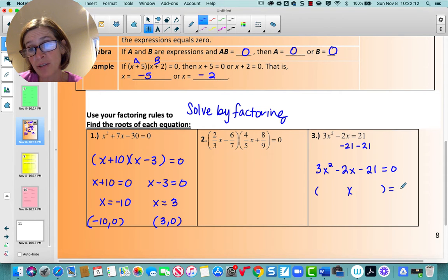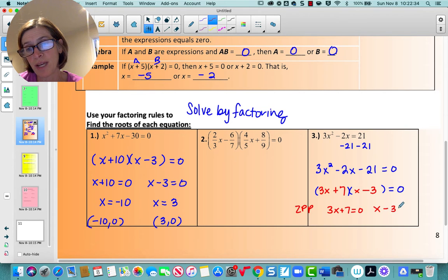Then you're going to solve by factoring. Now this is one of the harder factoring problems. So we've got to follow those rules we talked about earlier. So this would be 3x and x. And let's see, seven and three. So minus and plus. And then we apply the zero product property. So 3x plus seven equals zero and x minus three equals zero. So x will equal negative seven over three and x equals three. All right, so all of that should be reviewed for you.